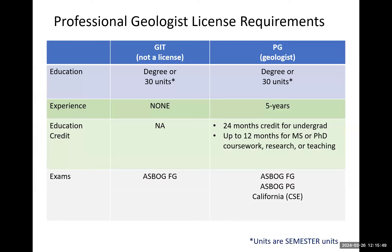This chart breaks all that down. For the GIT, you just have to finish your education and then you can take that exam — no experience needed. For the PG, you need the education and five years of experience, but you get two years of credit for an undergraduate degree, so you really need three years of professional experience, and then you pass the exams.